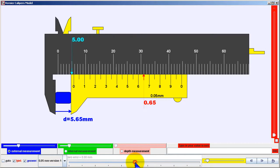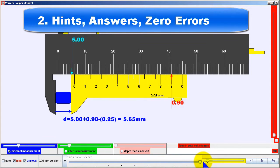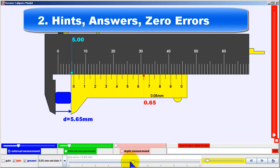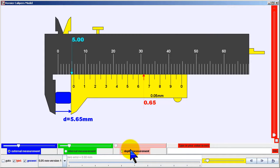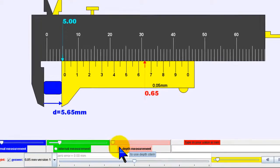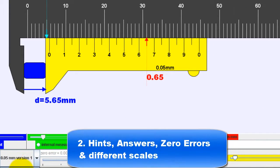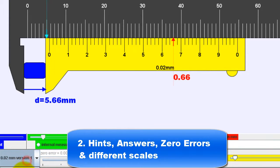We also introduced zero errors, which are not easily found in most other simulations, but we argue this is critical to understanding micrometers and vernier calipers. The different scales of the vernier allow students to figure out the different concepts involved in vernier scale design.